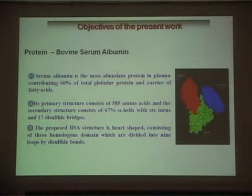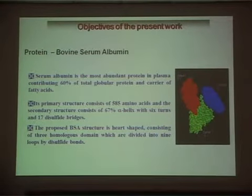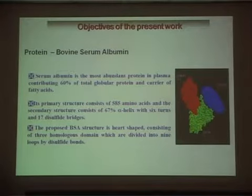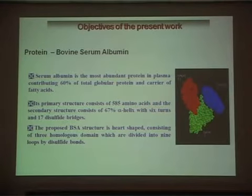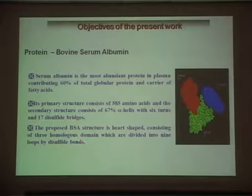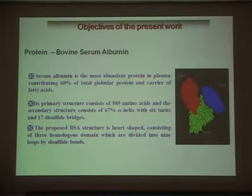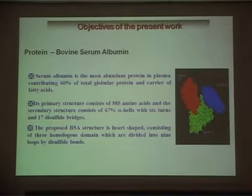The protein we used was bovine serum albumin (BSA), the most important protein in plasma, contributing 60% of total globular protein and serving as a carrier of fatty acids. Its primary structure consists of 585 amino acids, and its secondary structure has 67% alpha helix. The proposed BSA structure is heart-shaped, consisting of three homologous domains divided into nine loops connected by disulfide bonds.